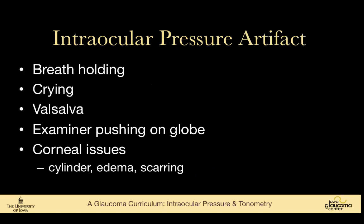Lots of things can impact the pressure reading. If the patient is holding their breath or performing a Valsalva maneuver, pressures become unreliable — a crying baby is a classic example. Patients who are short and heavy through the chest may have to pull themselves into the slit lamp, which can really raise intraocular pressure. Those patients may need a Perkins tonometer, tono pen, or similar device.